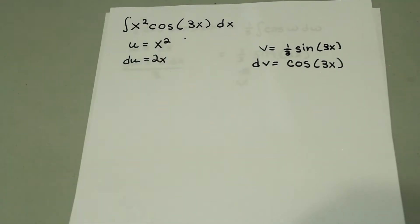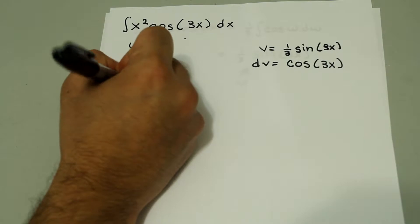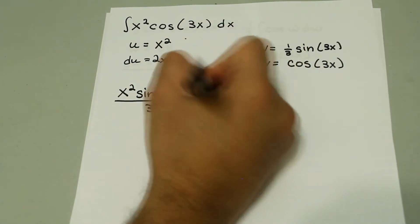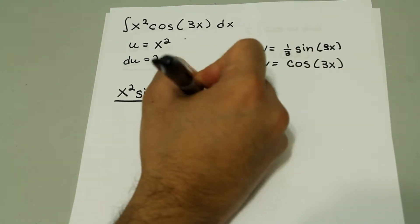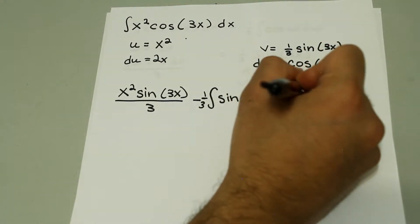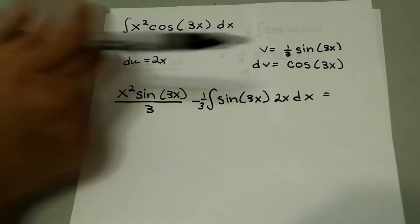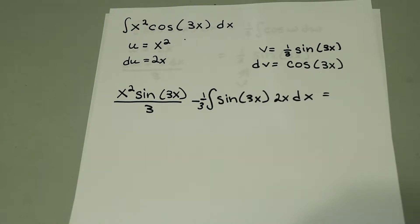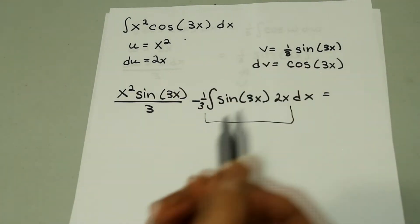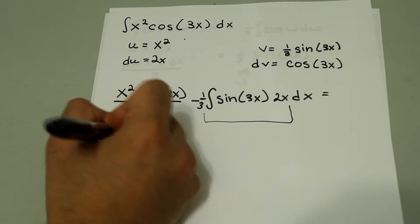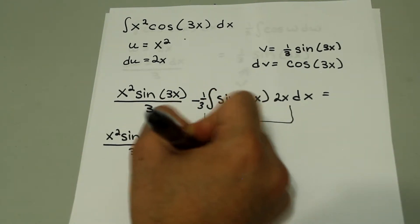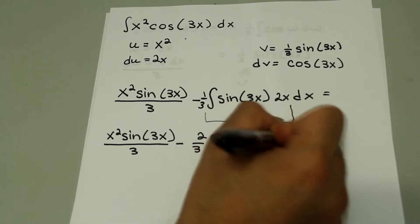So we can rewrite this problem as uv minus integral of v du: x squared times sine of 3x divided by 3, minus the integral of 1/3 sine of 3x times 2x dx. I'll take the 2 outside as a coefficient to simplify things. So that equals x squared sine of 3x divided by 3, minus 2/3 integral of sine of 3x times x dx.